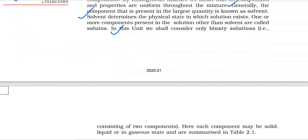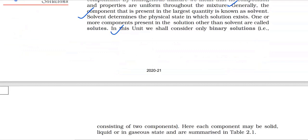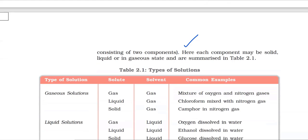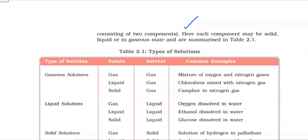In this unit, we shall consider only binary solutions, that is solutions consisting of two components. Each component may be solid, liquid, or in gaseous state, and these are summarized in Table 2.1: Types of solution, solute, solvent, and common examples.